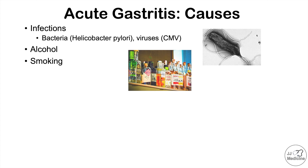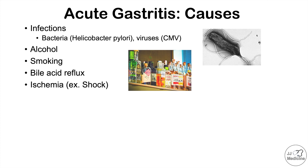Smoking may also contribute to or cause acute gastritis. Bile acid reflux is another cause. Ischemia is also a cause — we can see this in shock or ICU patients. If there are issues with blood flow to the stomach, we're reducing the nutrients and protective mechanisms available to the gastric mucosa, which can lead to acute gastritis.